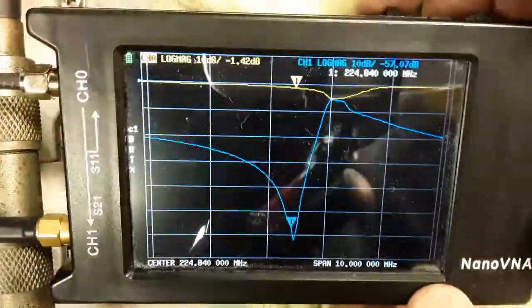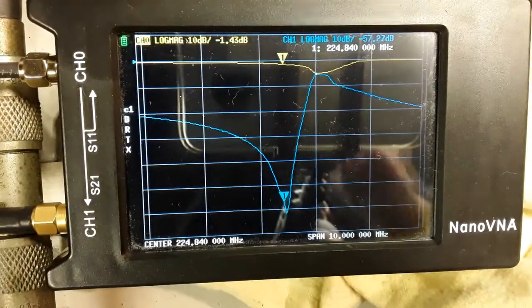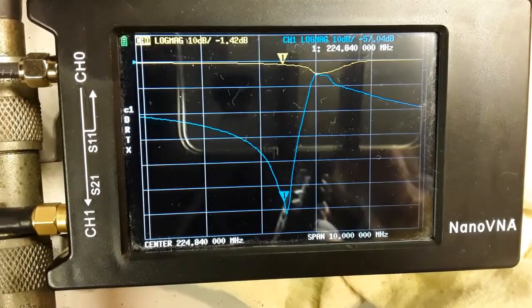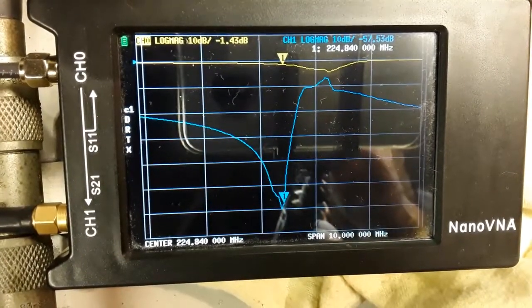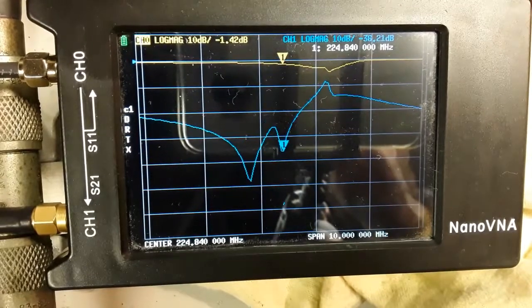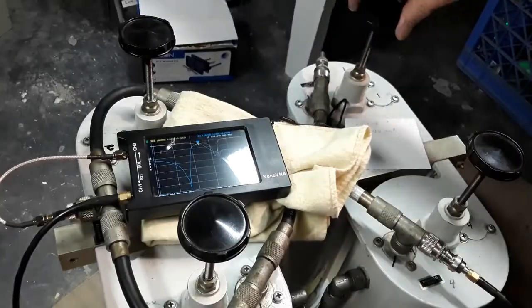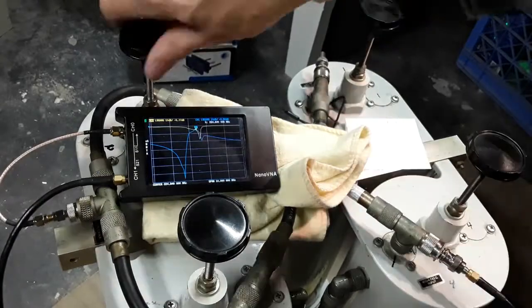Observing the blue trace showing the bandpass and notch shape and the yellow trace showing the SWR reflected on channel 0, I will now alternately adjust the transmitter side bandpass cavities.